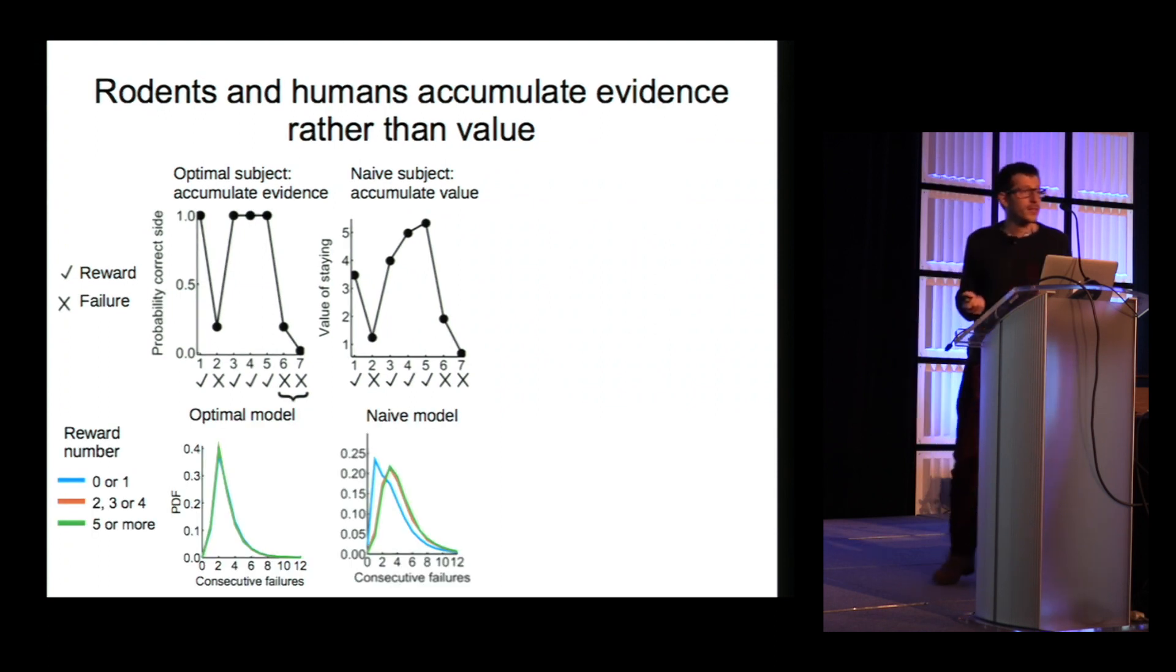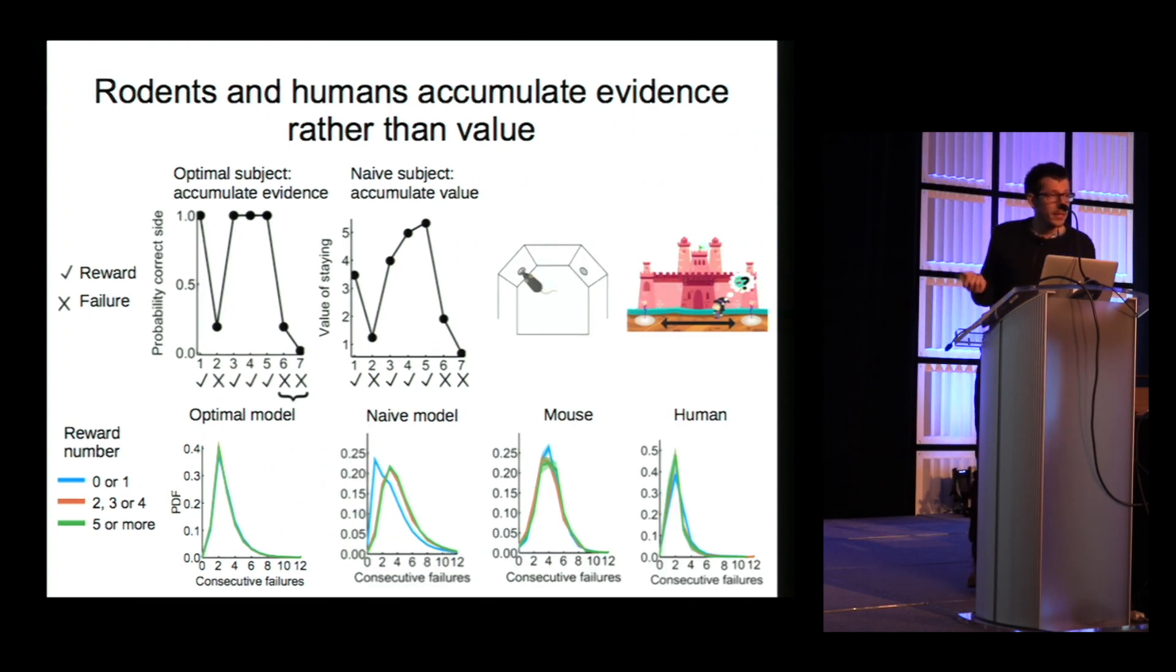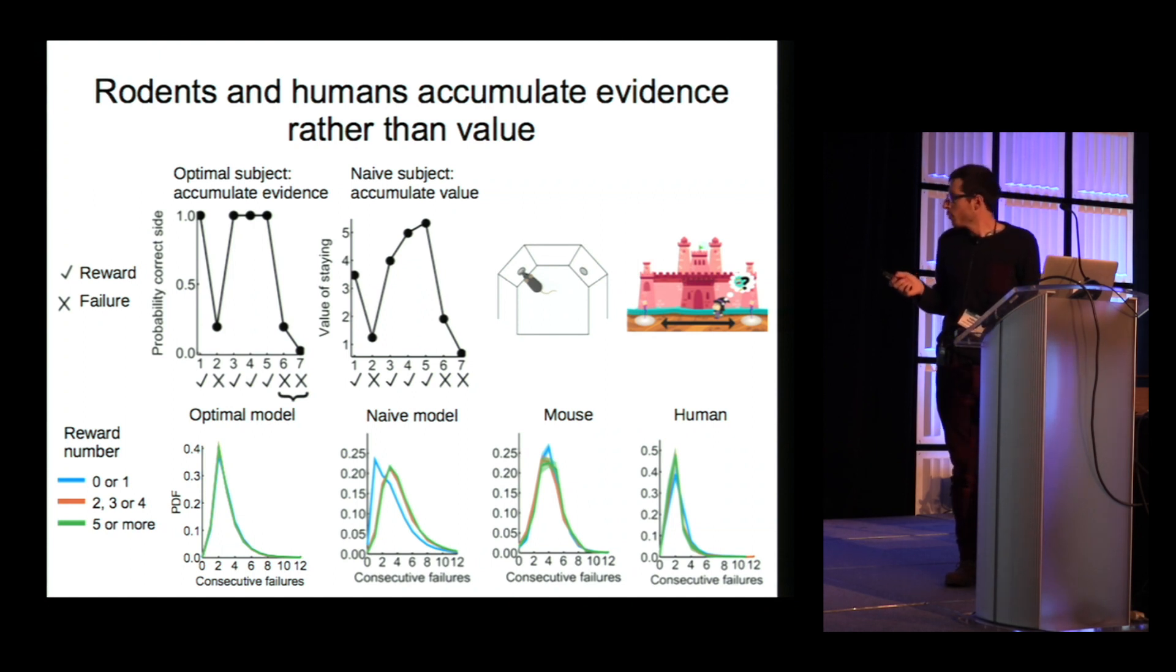Now, these two models make different predictions. For example, in the evidence model, the consecutive failures are the only relevant quantity. So, if we split by reward number, that doesn't matter at all. So, we get three overlapping distributions. Instead, naturally, in a value-based model, the more rewards, the longer the animal should be willing to stay, as we can see by the shift in the distributions. And very interesting, when we look at the data for rodents and for humans, we see that in both cases, the distributions overlap, meaning that both mice and humans are accumulating evidence, and not value in this task.